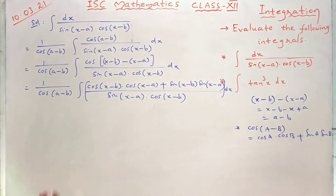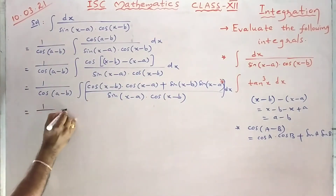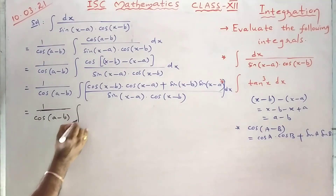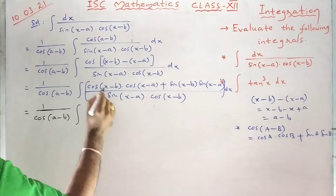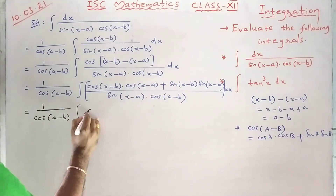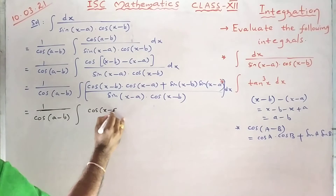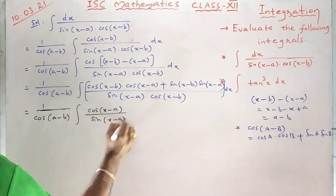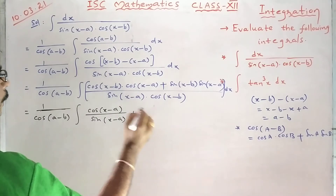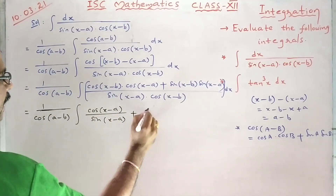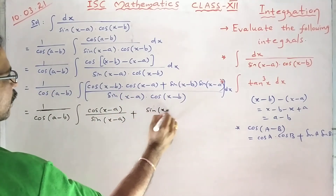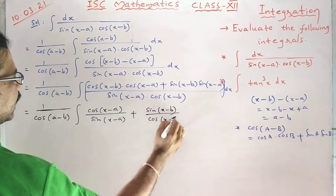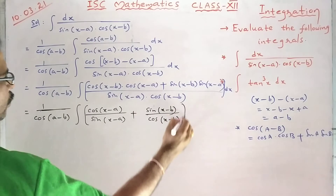Now split the integration. I am splitting the terms like this: 1 by cos(a minus b) integral — here what is going to cancel is cos(x minus a) by sin(x minus a) remains, plus here the two cancel giving sin(x minus b) by cos(x minus b), whole dx.